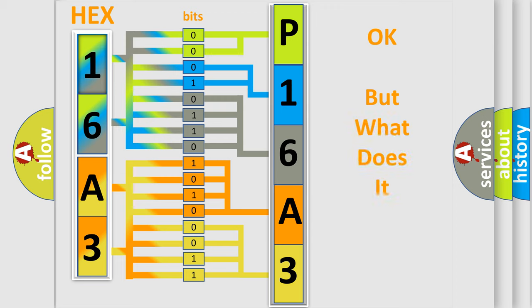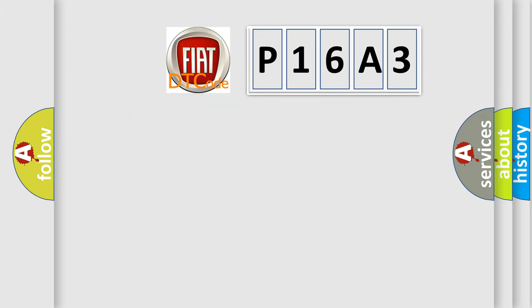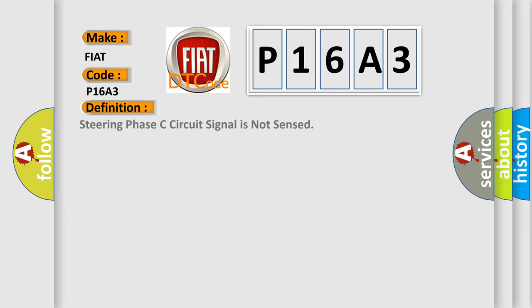The number itself does not make sense to us if we cannot assign information about what it actually expresses. So, what does the diagnostic trouble code P16A3 interpret specifically for FIAT car manufacturers? The basic definition is: Steering phase C circuit signal is not sensed. Here is a short description of this DTC code.